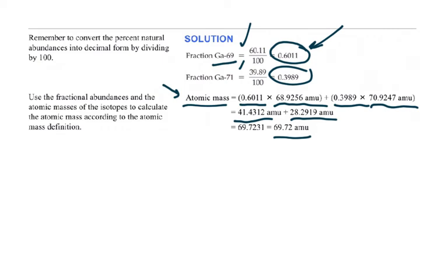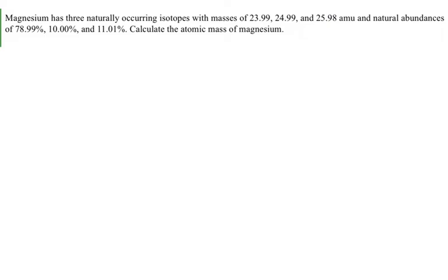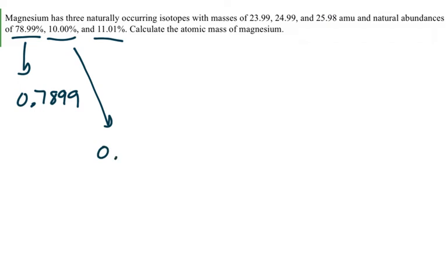Let's try one more practice problem — magnesium. It has three naturally occurring isotopes. The masses are 23.99, 24.99, and 25.98 atomic mass units. The percentages are also given and will add up to 100%. Remember, these percentages need to be changed to decimals — divide each by 100, which means moving the decimal point two spaces to the left. I'm going to pause here; try this problem on your own, and then we'll go over it.